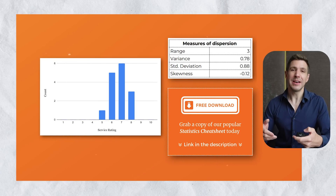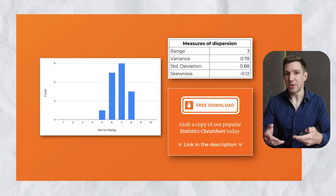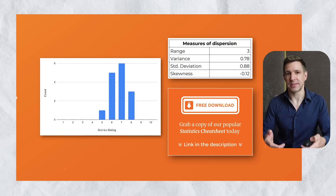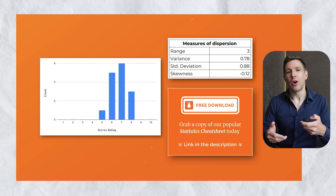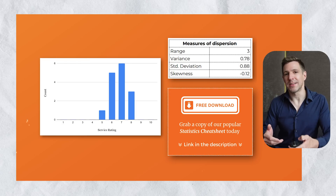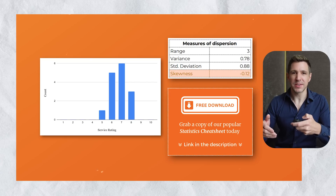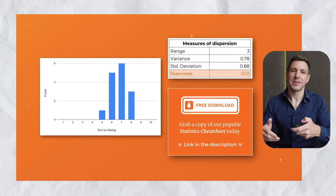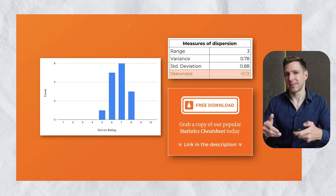For the sake of comparison, let's take a look at another much more tightly grouped — that is, less dispersed — dataset. All of the ratings lay between 5 and 8 in this dataset, resulting in a much smaller range, variance, and standard deviation. You might also notice that the data in this set are clustered toward the right side of the graph — in other words, the data are a bit skewed. If we look at the skewness statistic for this dataset, we can see a result of negative 0.12, and that reflects that slight lean.